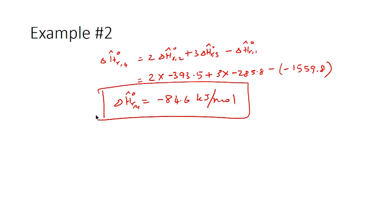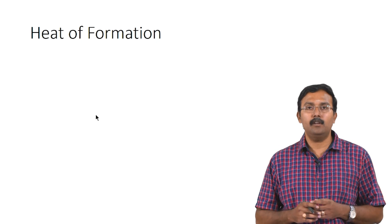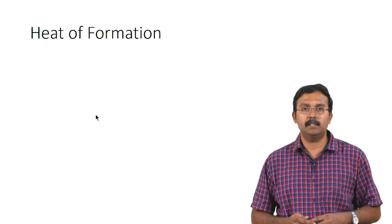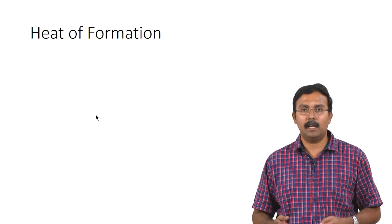So −84.6 kJ/mol is the heat of reaction for the fourth reaction. Using Hess's law we identified the algebraic operations needed to get reaction 4 from reactions 1, 2, and 3, then applied those same operations to the heats of reaction. Now let us move on to certain specific types of heats of reaction used in energy balance calculations.